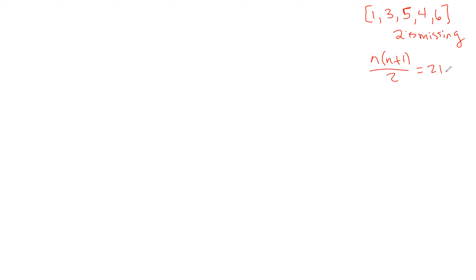If we add up all of the actual elements in the array that we're given, that would be four, nine, 19. So if we subtract those, we get our missing number. It's a pretty simple way to solve this problem. If the array had been sorted, we could do a more efficient solution using binary search. In this case, we've got a linear solution — O(n).